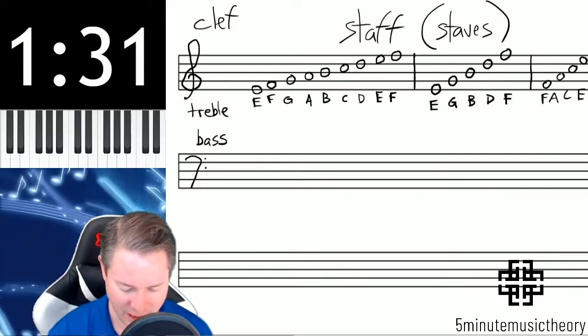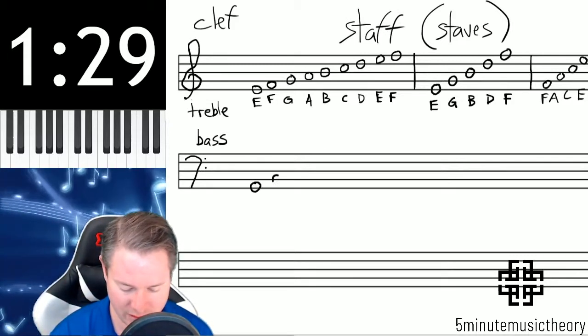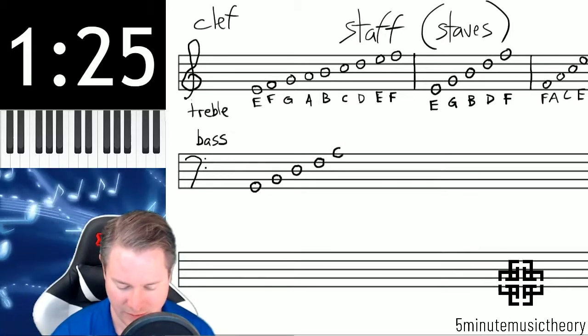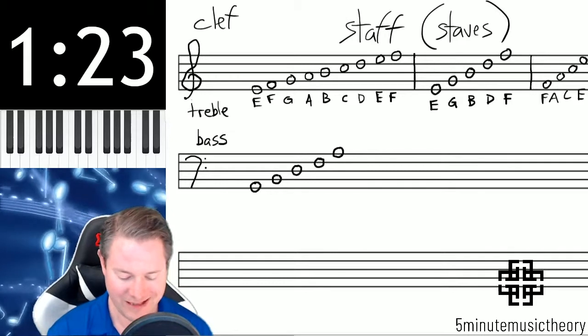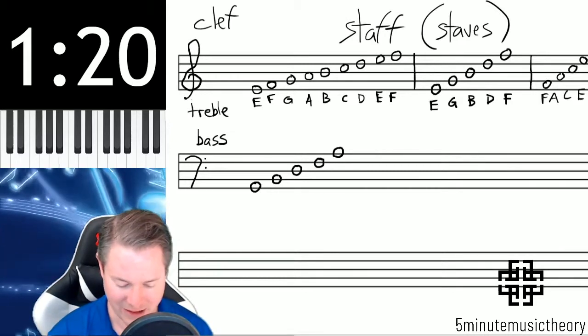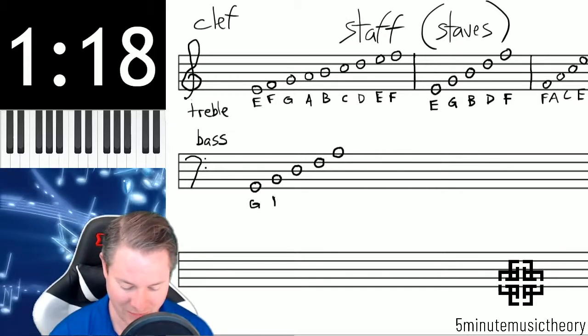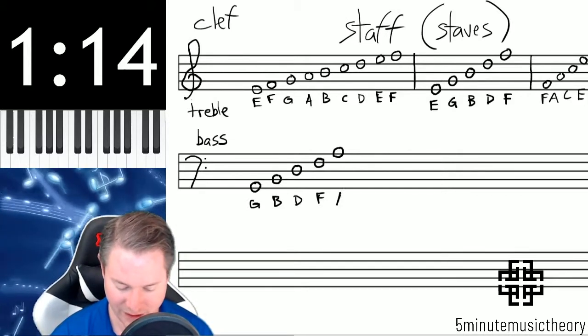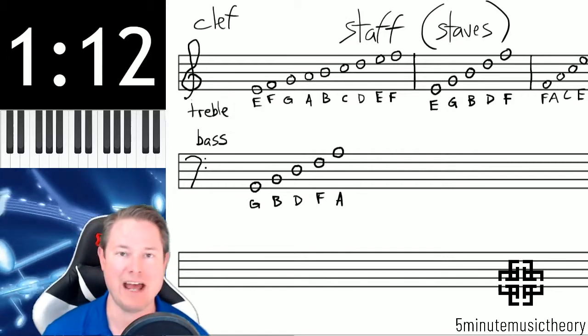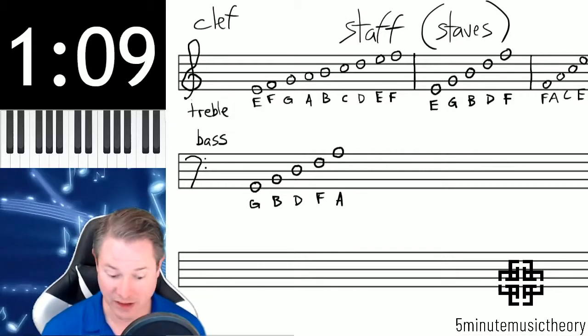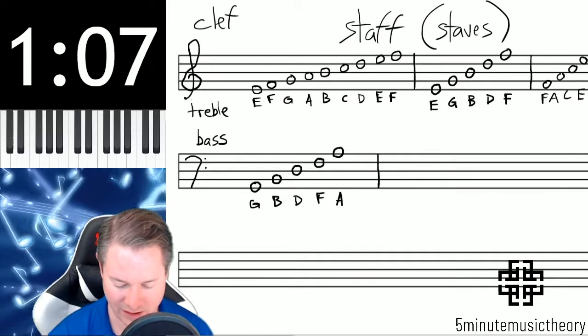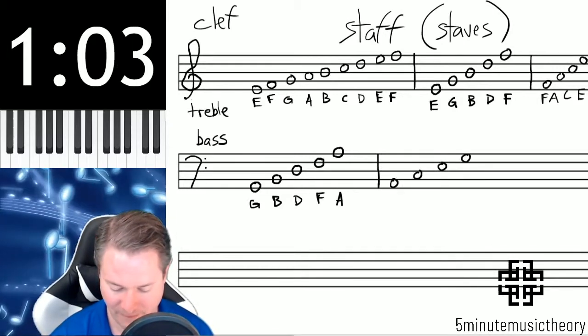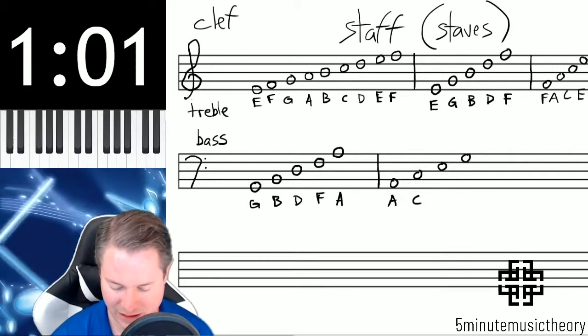Now bass clef, if we look at the notes that are on the lines, we'll put those in there. These are different than in treble clef because the clef is different and it assigns, the bass clef assigns different meaning to the lines than the treble clef did. G-B-D-F-A are the notes that are on the lines in bass clef, and then the notes that are in the spaces are A-C-E-G.